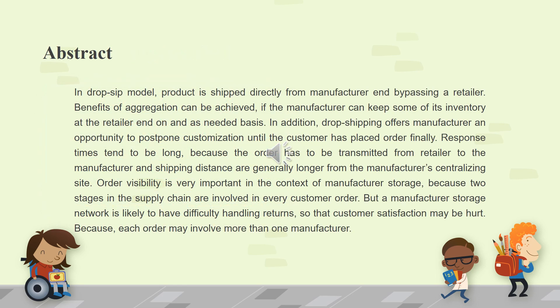In the dropship model, the product is shipped directly from the manufacturer's end, bypassing a retailer. Benefits of aggregation can be achieved if the manufacturer can keep some of its inventory at the retailer end on an as-needed basis. Drop shipping offers manufacturers an opportunity to postpone customization until the customer has placed an order. Response times tend to be long because the order has to be transmitted from the retailer to the manufacturer, and shipping distances are generally longer from the manufacturer's centralizing site.